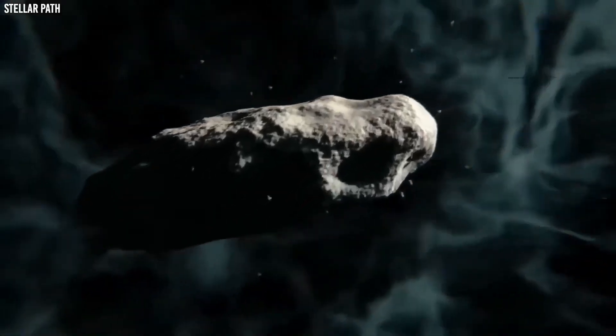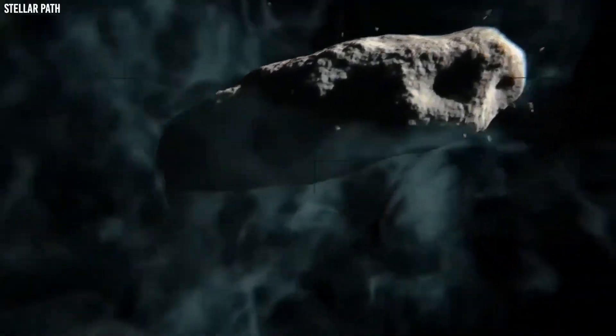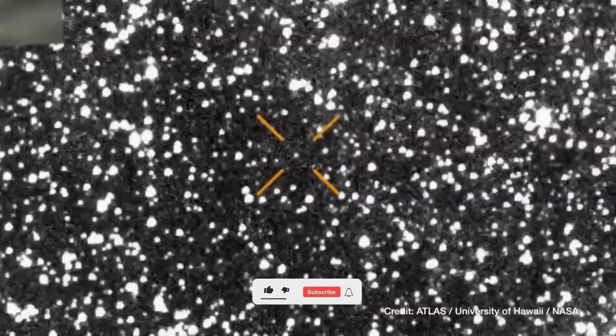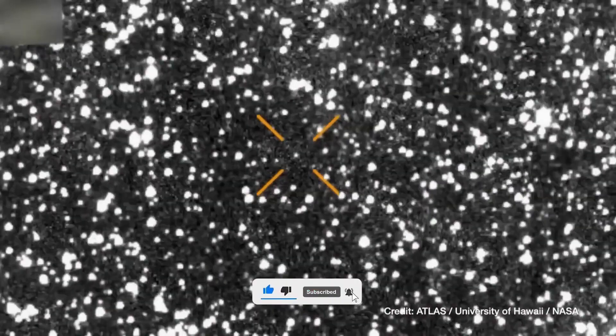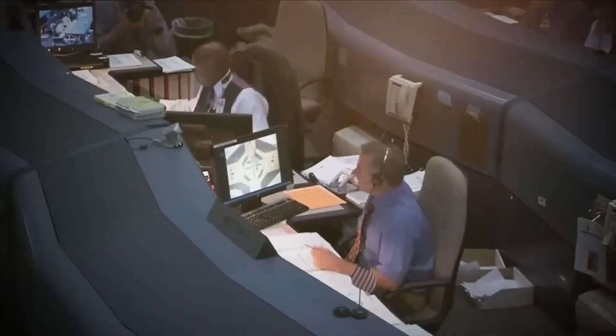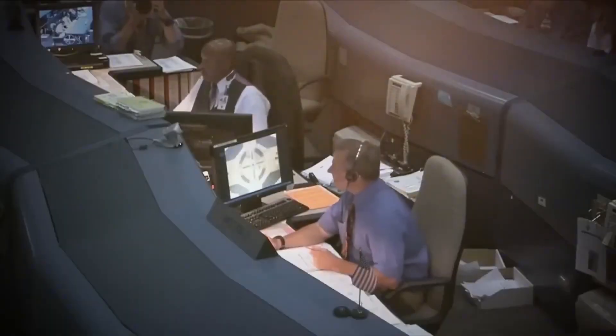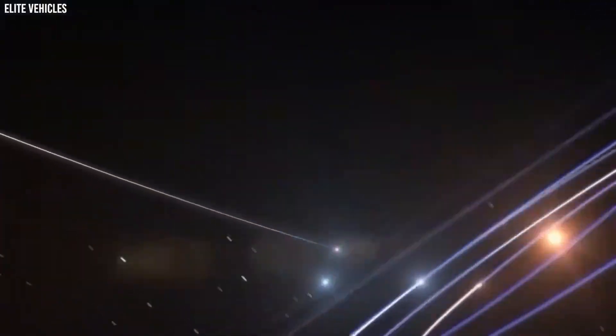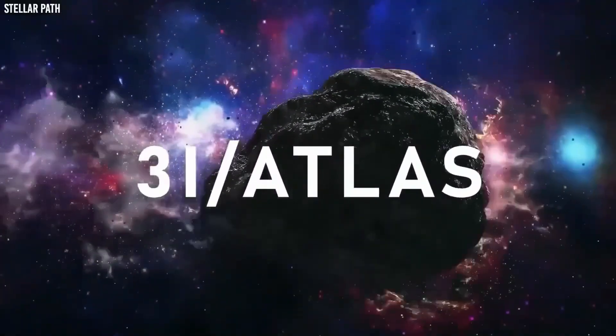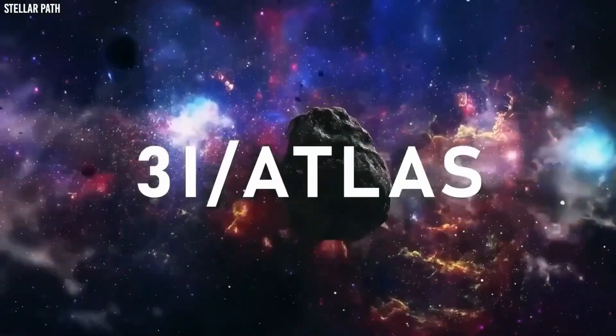In ordinary comets, such extra acceleration comes from outgassing, when sunlight warms icy surfaces and jets of vapor spurt outward, nudging the body's orbit by tiny amounts. But in this case, the signal didn't look like the messy, irregular thrust typical of that process. Instead, it had a distinct radial component pushing away from the sun, and a transverse component shoving sideways in a manner that seemed almost steered.